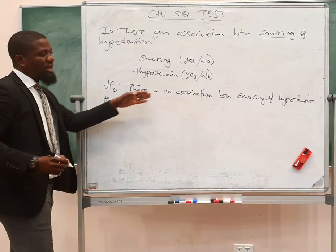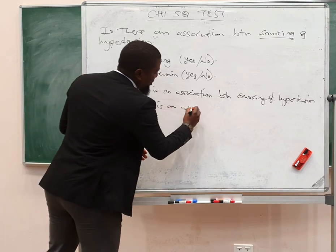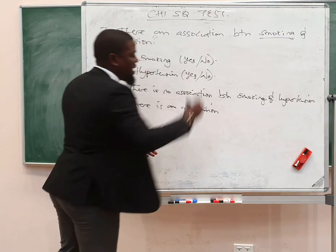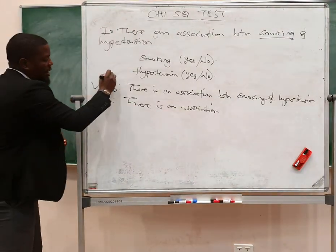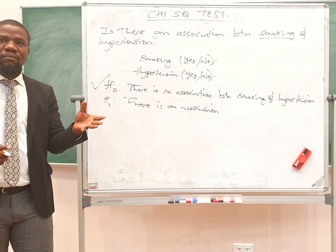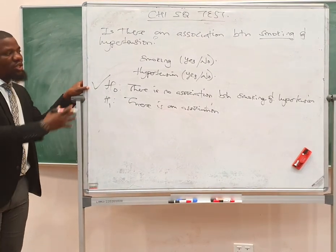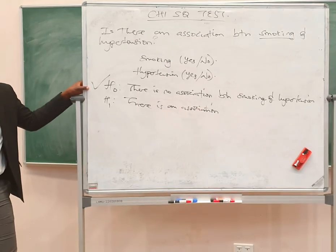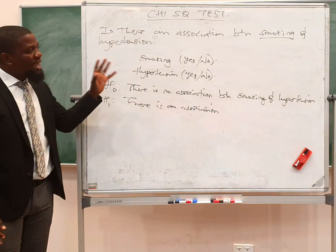The alternative hypothesis would automatically follow from the null hypothesis — it will state that there is an association. You and I well know that when we are carrying out research, we test the null hypothesis because the null hypothesis is the one which has the definite answer. The chi-square test is the test you can use to test this association.